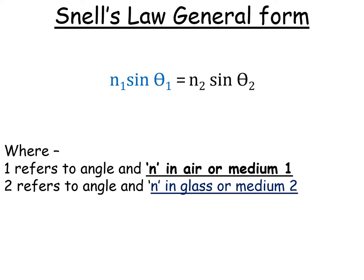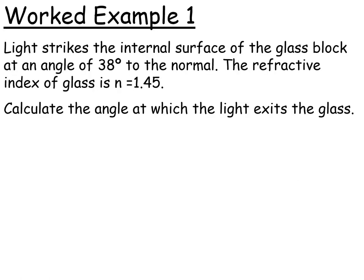Let's have a look at a worked example here. As always, we're using a KFC technique. But we have to be careful here because it says light strikes the internal surface of the glass block at an angle of 38 degrees to normal. So this is actually light inside the glass block. So this angle is actually inside the glass. So it means this is actually theta 2, because remember, theta 2 is always the angle in the glass.